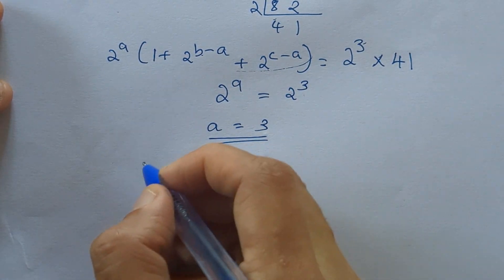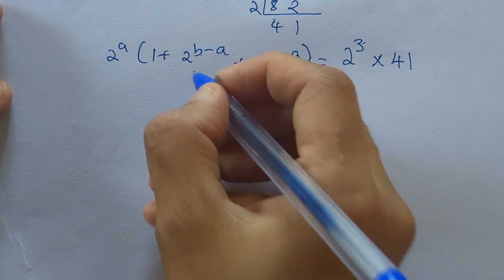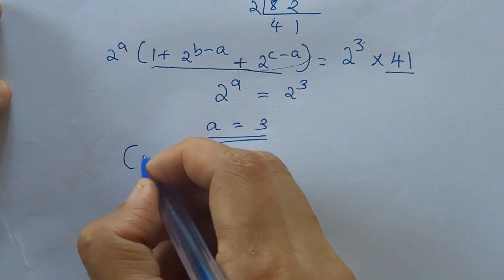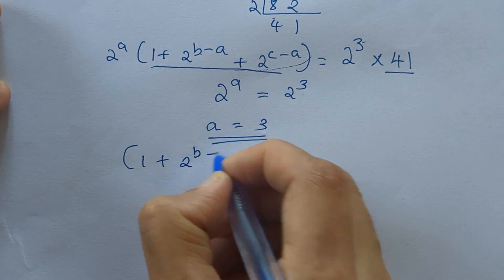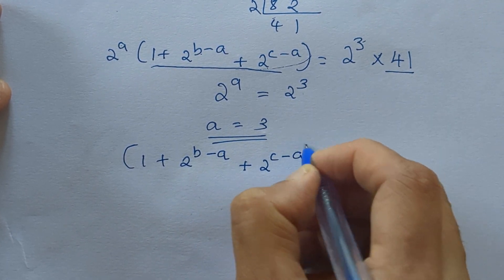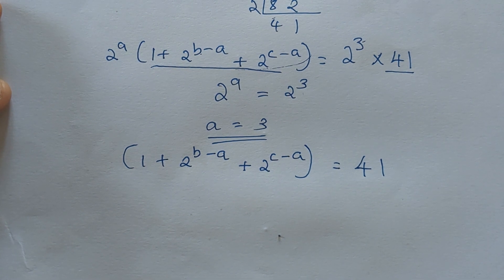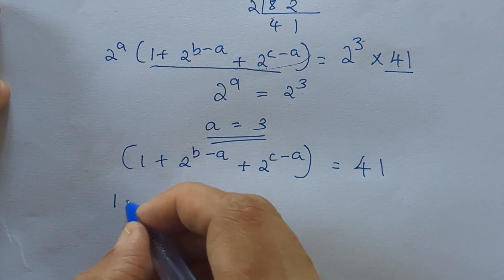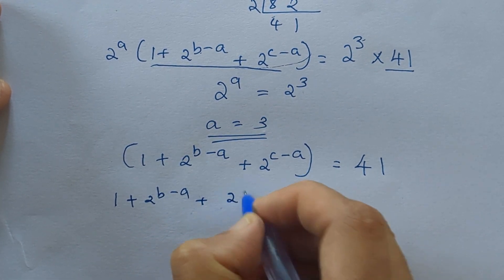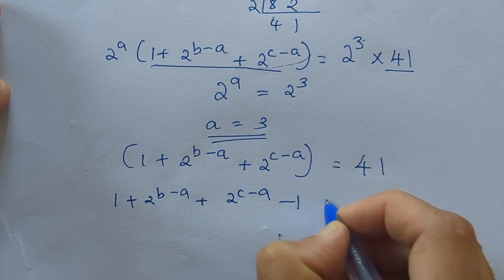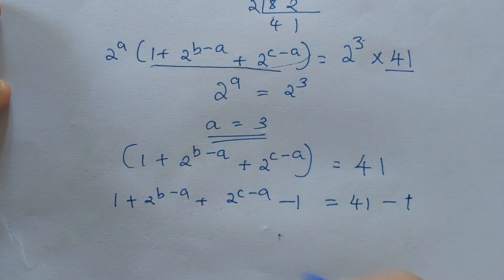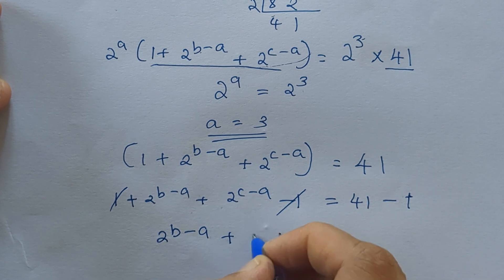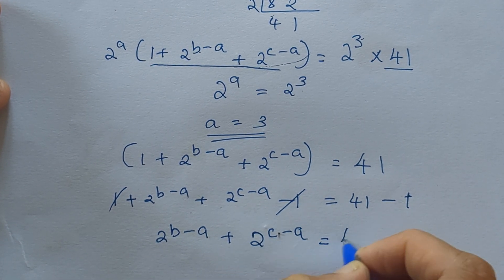Now we have to find the other variables. From the equation, this part equals 41. So we write 1 plus 2 raised to B minus A plus 2 raised to C minus A equal to 41. Subtracting 1 from both sides, the ones cancel and we get 2 raised to B minus A plus 2 raised to C minus A equal to 40.